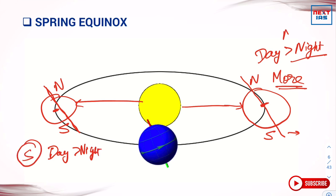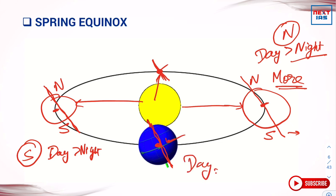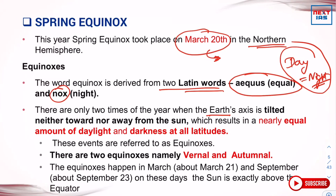But at two specific locations in Earth's orbit, the axis is neither tilted toward nor away from the sun — it is perpendicular to the sun's rays. In these two positions, the length of day equals the length of night, giving nearly equal daylight and darkness at all latitudes. These are referred to as equinoxes.